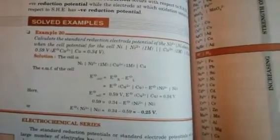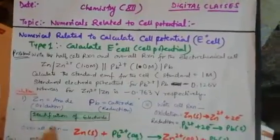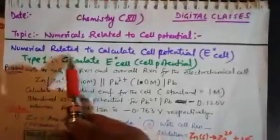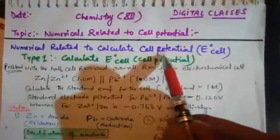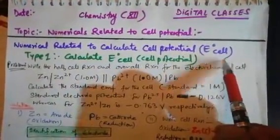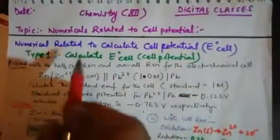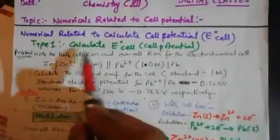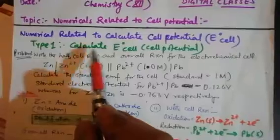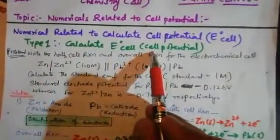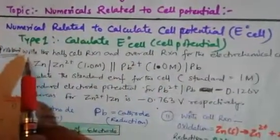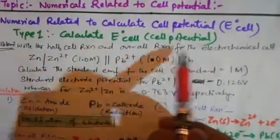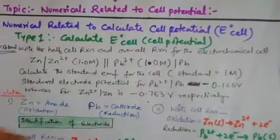Let's take some examples. We are calculating E°cell — the cell potential. This type of numerical comes in two forms. Type 1: calculate the complete E°cell. I have taken a question from your Modern ABC book: write the half-cell reaction and overall reaction for the electrochemical cell. You need to practice all the questions given in the NCERT book as well.